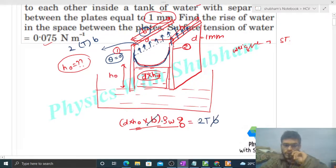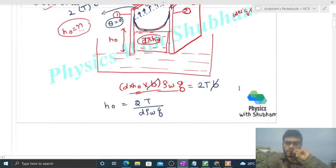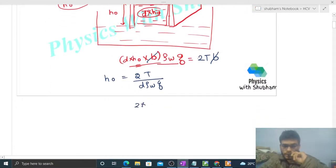So that is equal to 2 into t into b. So b cancels from here. What you are getting: h naught is equal to 2t divided by d rho w into g. Just put the values: 2 into surface tension that is 0.075 divided by d that is 10 to the power minus 3, 1 mm, into density of water 10 to the power 3 into g.